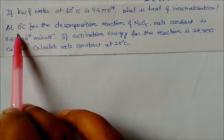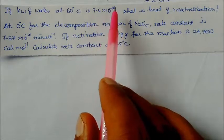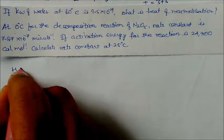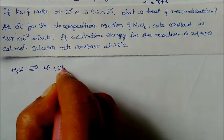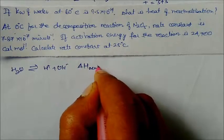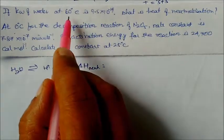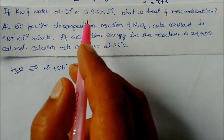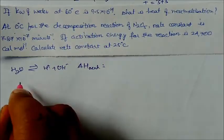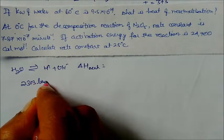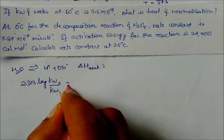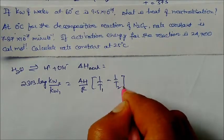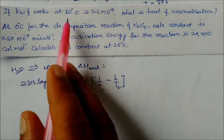Third question: if Kw of water at 60°C is 9.5×10⁻¹⁴, what is the heat of neutralization? Water dissociates into H⁺ and OH⁻. We have two dissociation constants — one at 60°C and one at 25°C (room temperature). We write: 2.303 × log(Kw2/Kw1) = (ΔH / R) × (1/T1 − 1/T2), where T1 is the lower temperature.